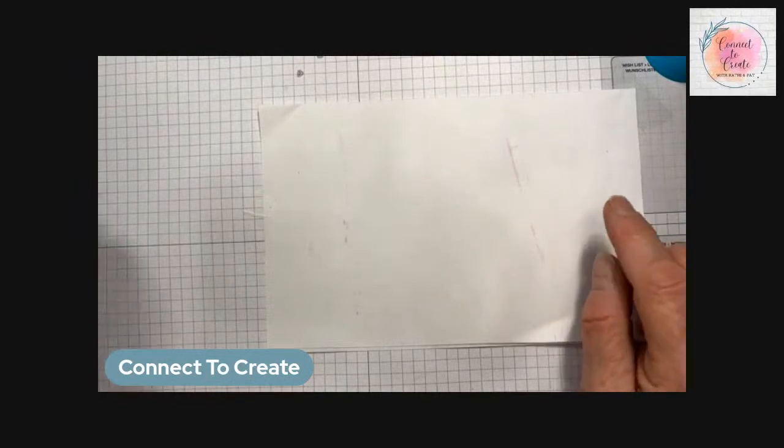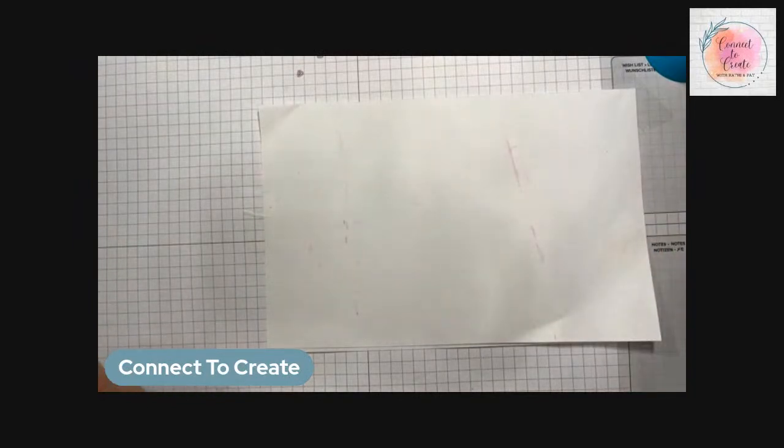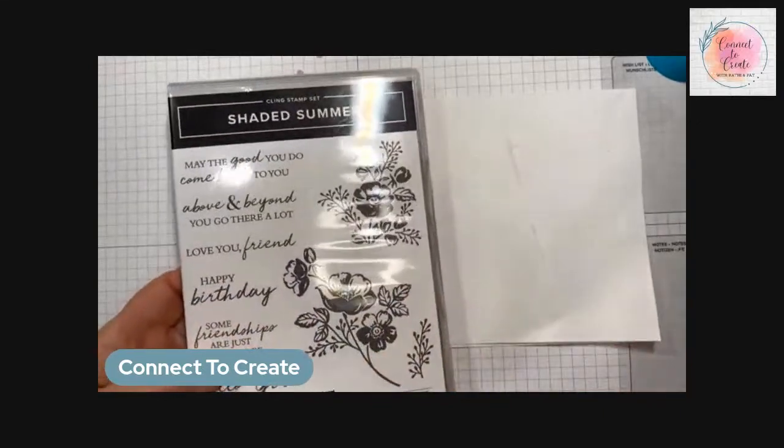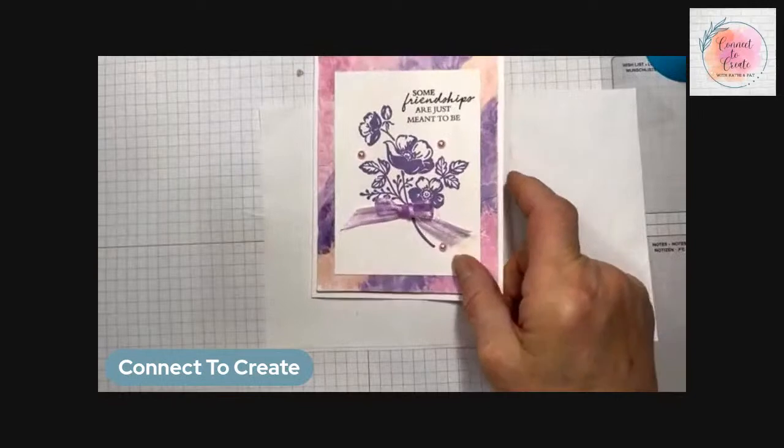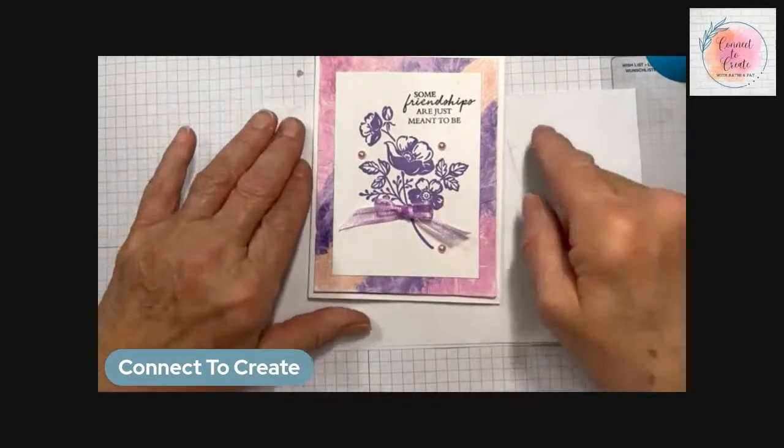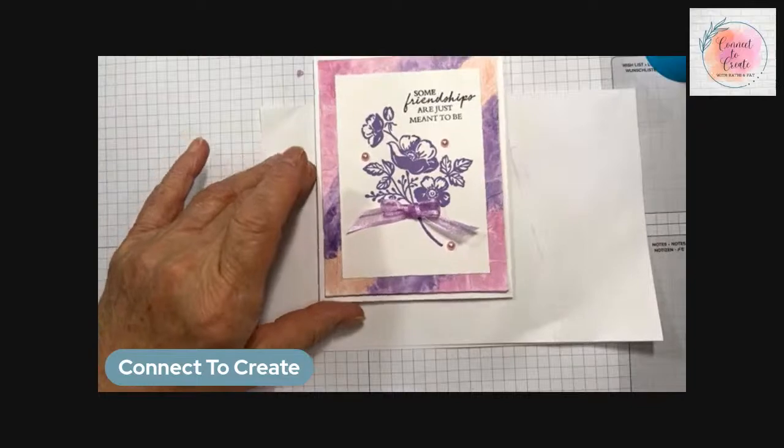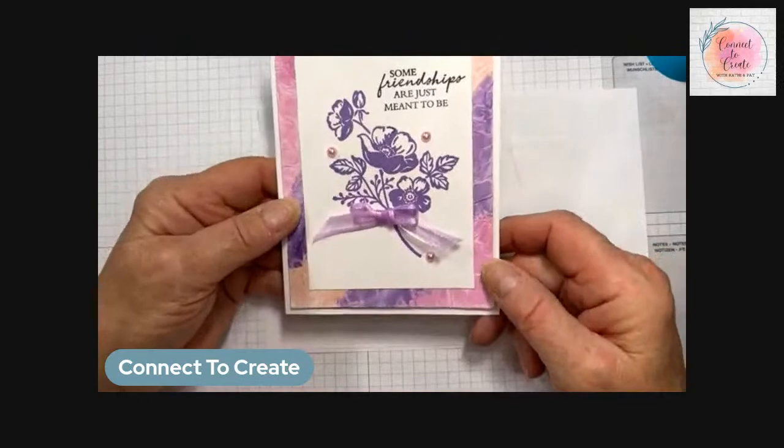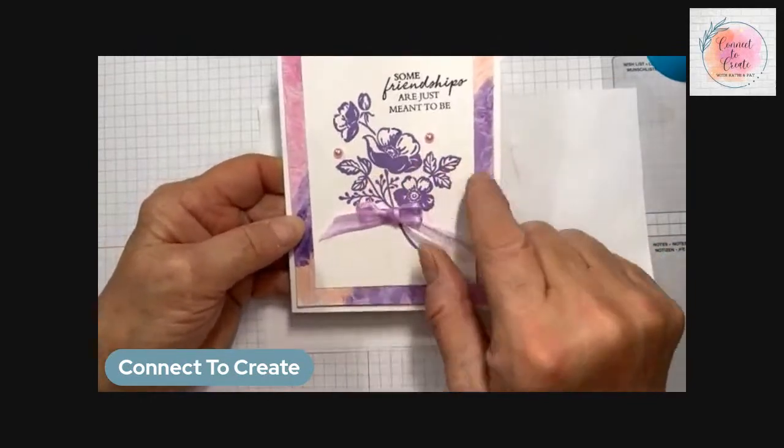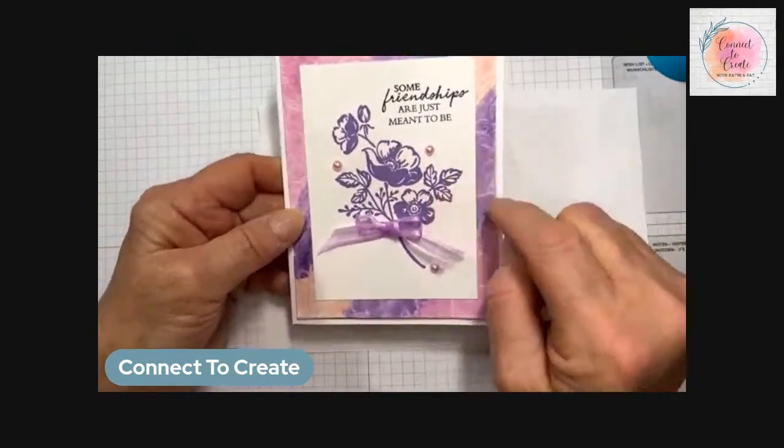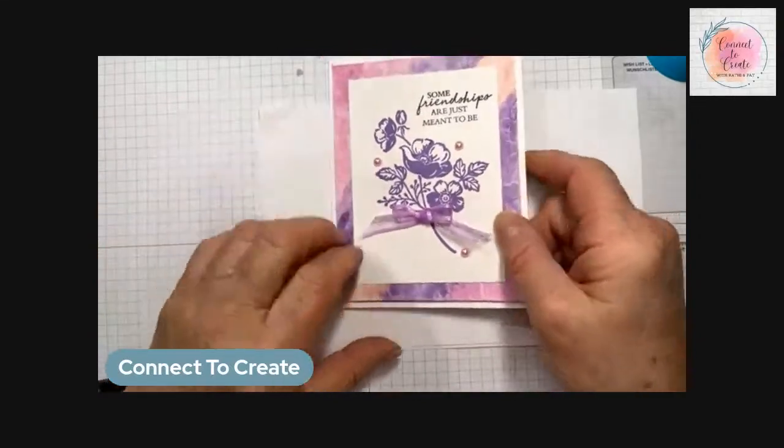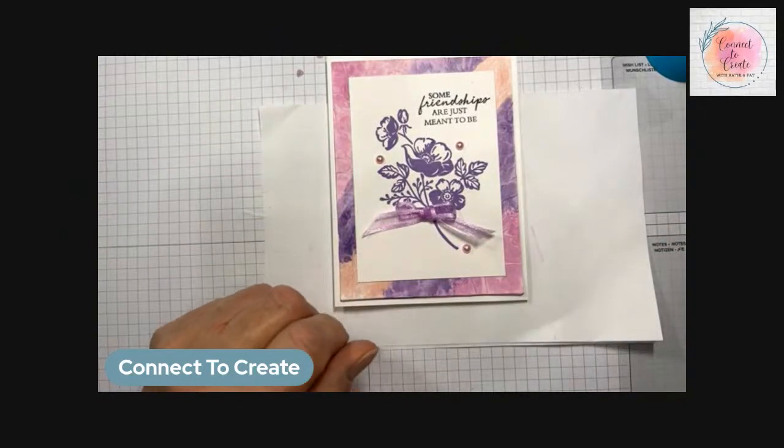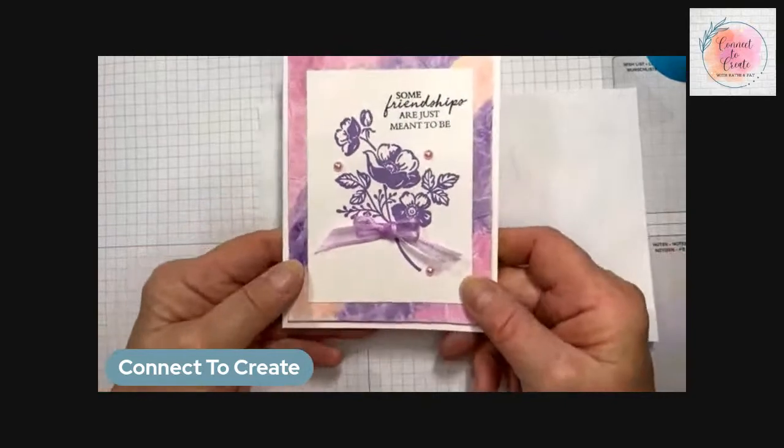So the first card, I used the Shaded Summer stamp set. And here's my card with exactly those colors. Blushing Bride, Fresh Freesia and Highland Heather. And I have it as my background and just used the stamp and went ahead and stamped it in Highland Heather. And my bow is in Fresh Freesia and I use Blushing Bride. I use some of the pastel dots. So that's my first card.